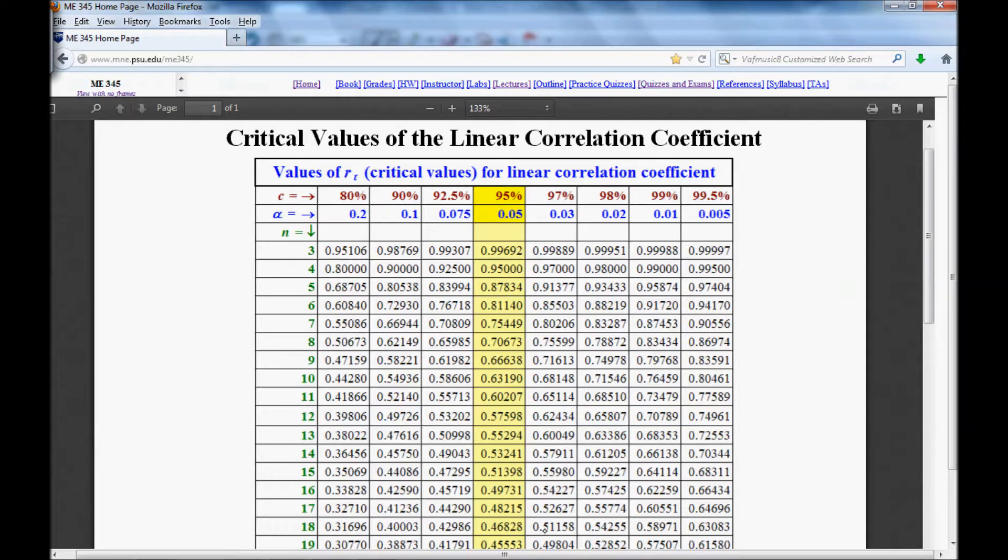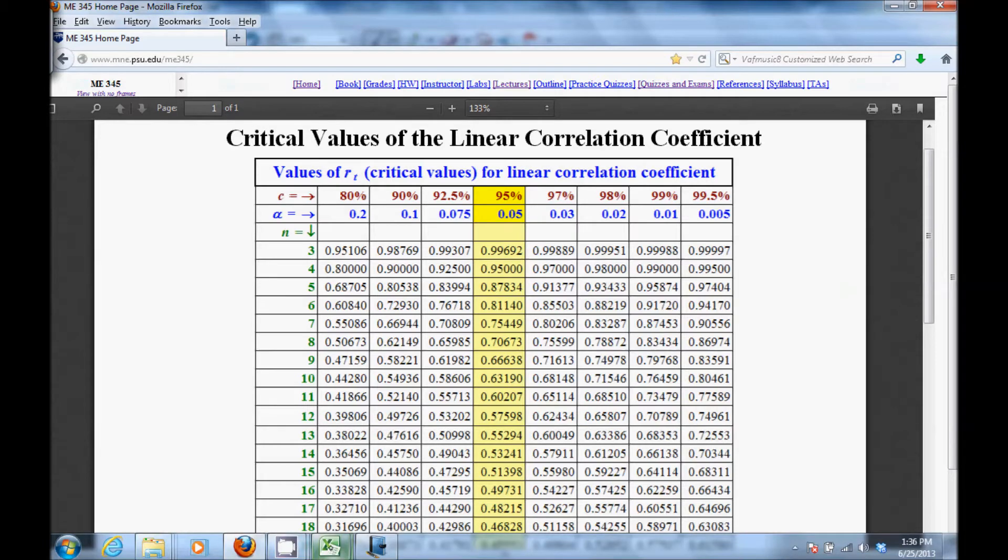We see that at 95%, we have 0.468. So for our value of 0.582, it lies somewhere in between these two values, these two columns, which is 98 and 99% confidence level. So we can linearly interpolate.